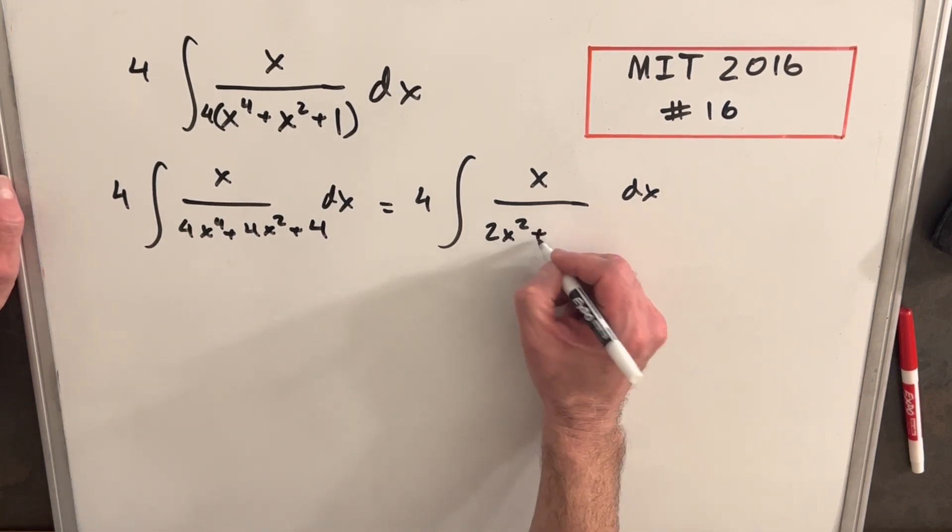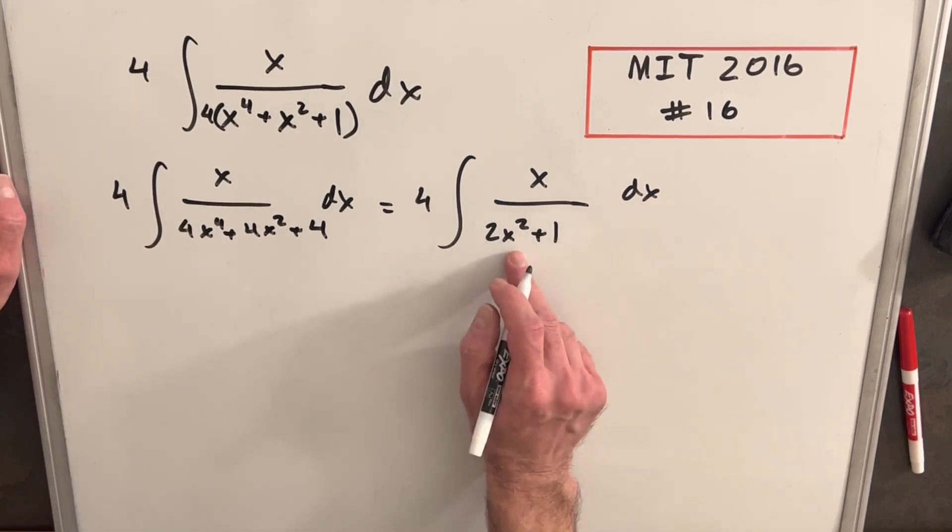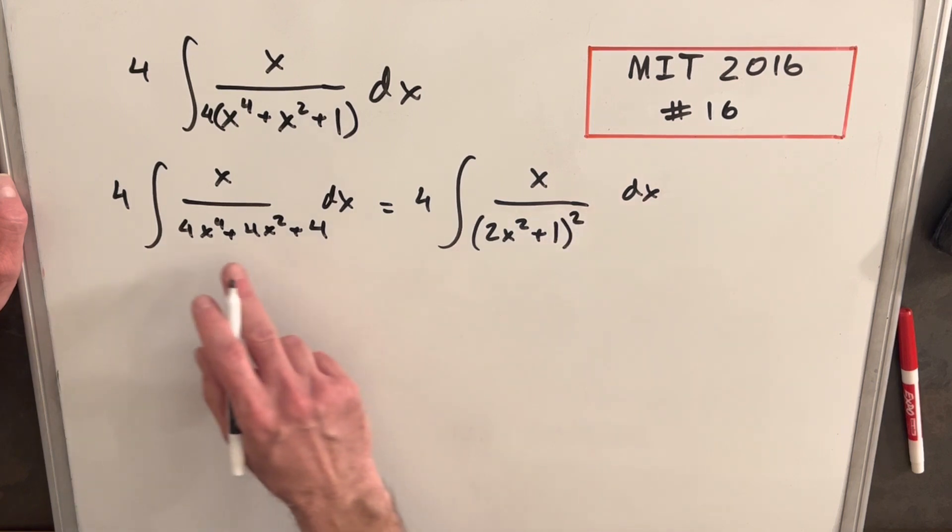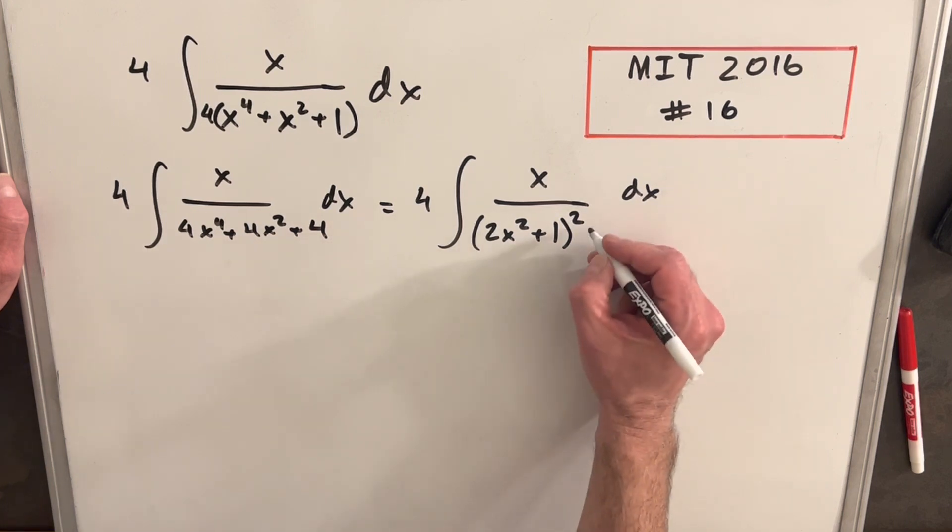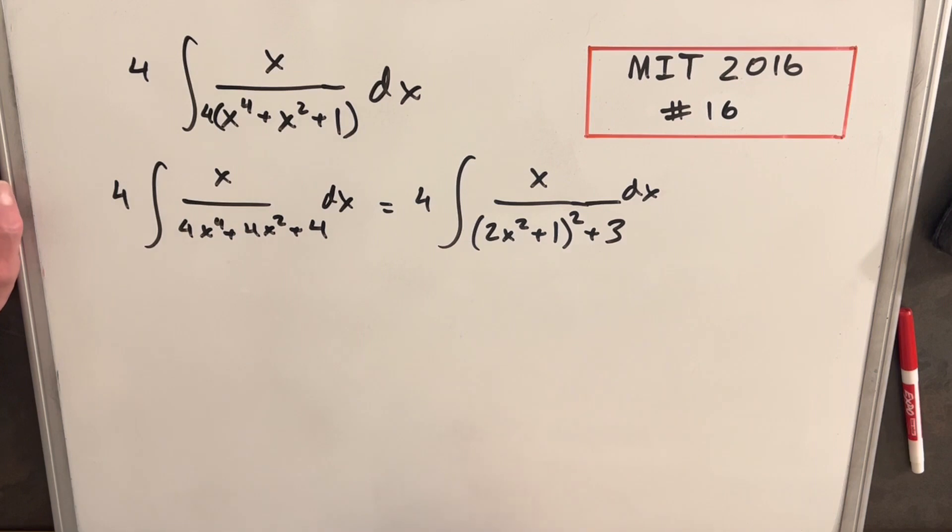And if we have 2x squared plus 1 and we square this, this is going to give us 4x to the 4th plus our 4x squared plus a 1. We need to get the 4, so what we can do is add a 3. And now we're in good shape.